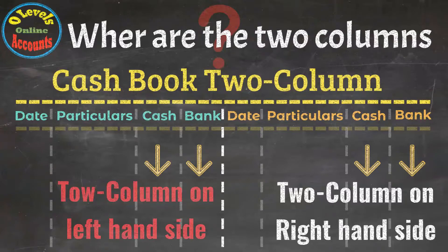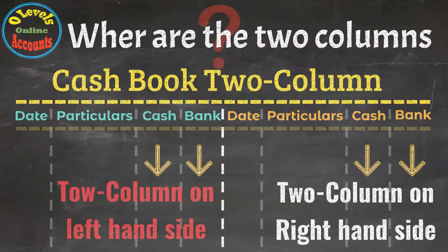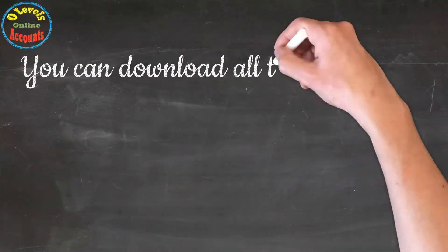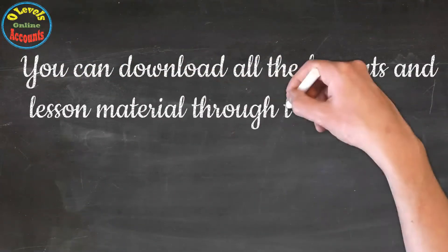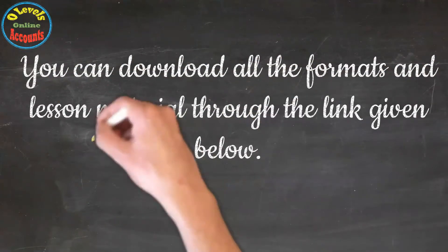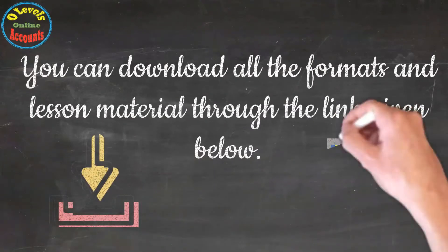Hopefully you got a clear understanding of the two-column Cash Book and why it is called two columns. If you have any query regarding the lesson, kindly ask in the comment section of this video. You can download the related formats and lesson material through the link provided below.